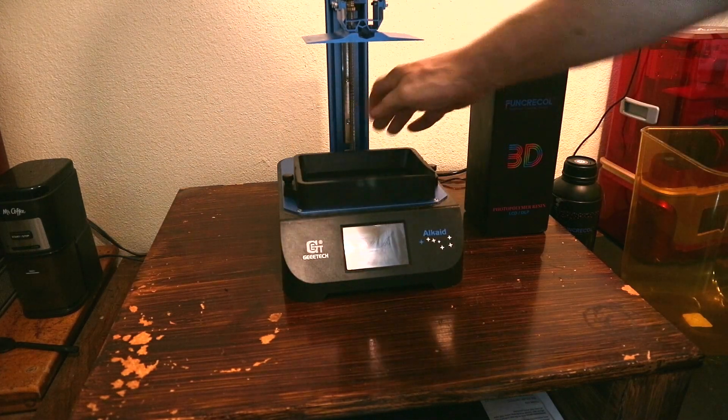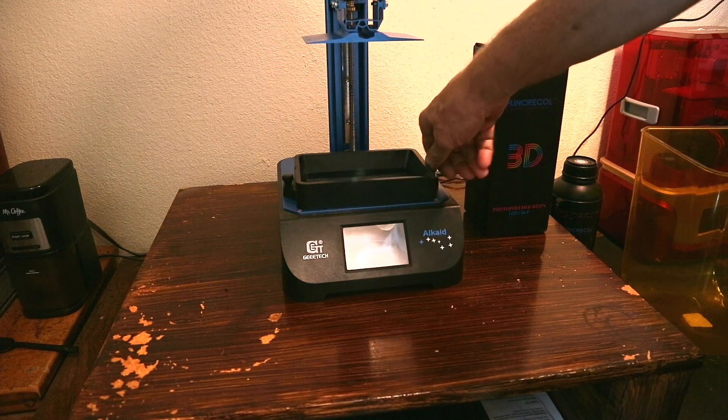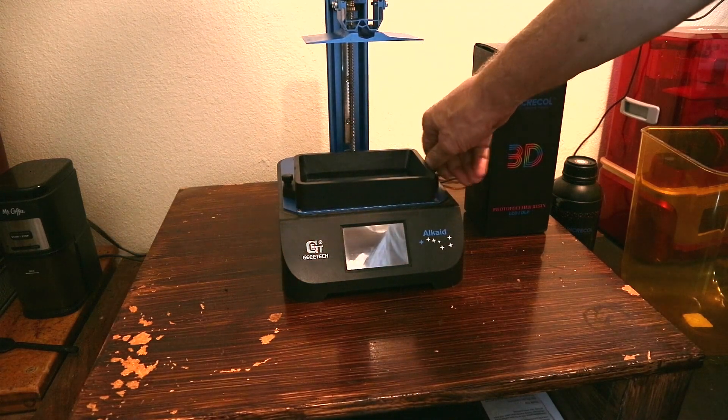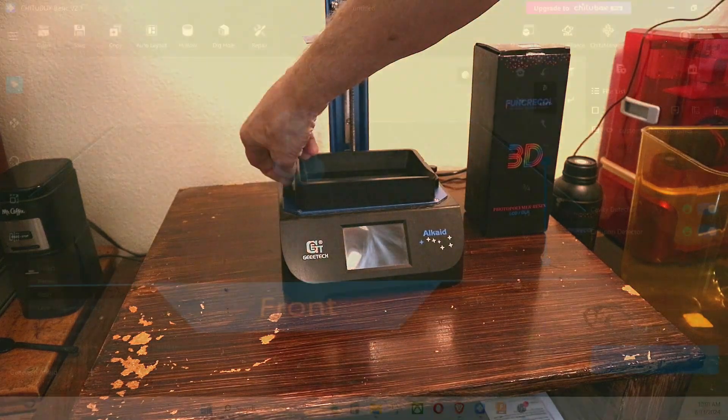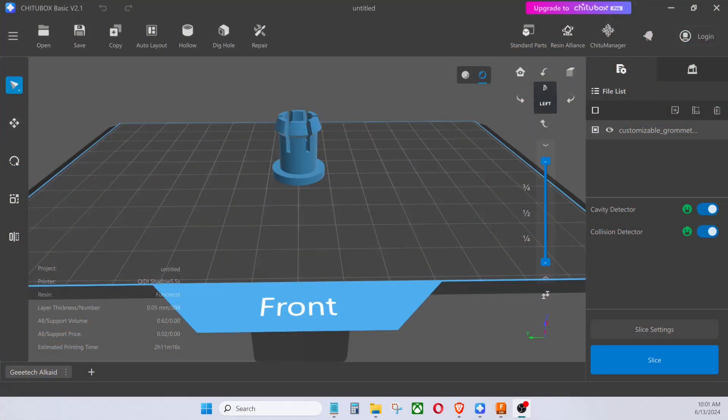And I am going to be using Chitubox. I think it's version 2.1 or something like that is the slicer. So this is Chitubox basic version 2.1. I have copied all the correct settings in.